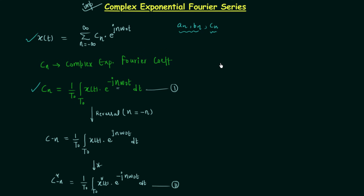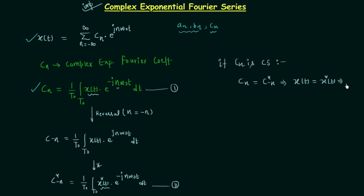Now, if cₙ is conjugate symmetric, this means cₙ equals c₋ₙ conjugate. Looking at equations 1 and 2, the left-hand sides are the same, so the right-hand sides must also be the same. Comparing them, we find x(t) equals the conjugate of x(t). This implies x(t) is real in nature, because whenever the conjugate of a signal equals the signal itself, there is no imaginary part and the signal is purely real.